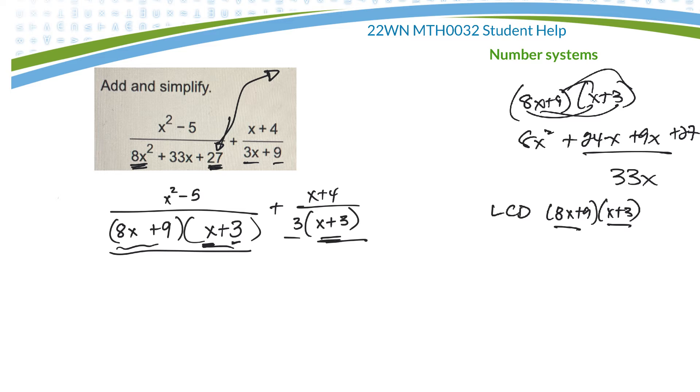So this occurs once, this occurs once. Now, over here, there's a 3 that I don't have yet. So I have to include that as part of the lowest common denominator. But it has 1x plus 3. I already have 1x plus 3. So I'm good.